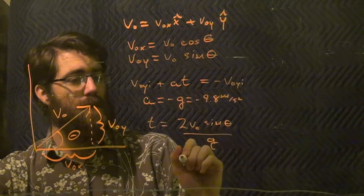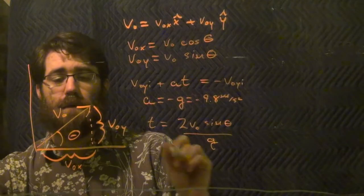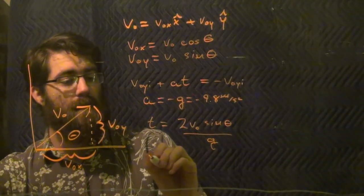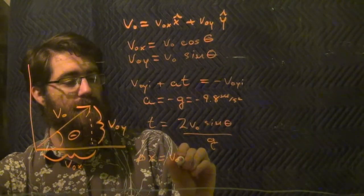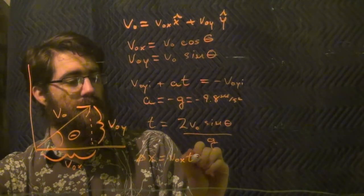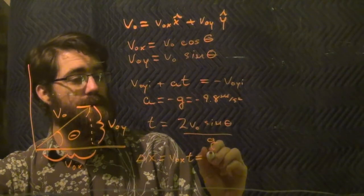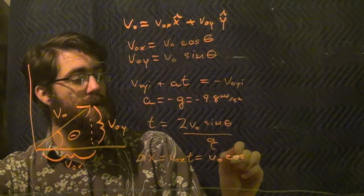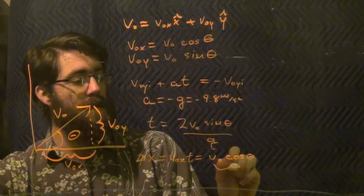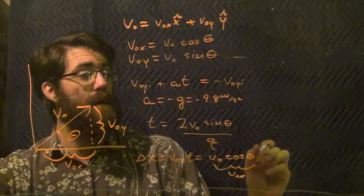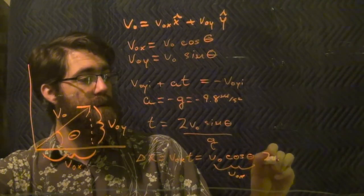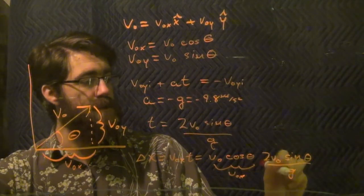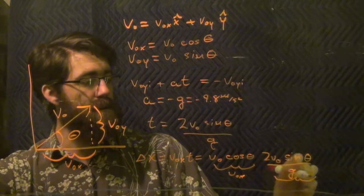Which then allows us to solve for the total distance traveled by the projectile, which will be delta x equals v-naught x t, equals v-naught cosine theta times 2 v-naught sine theta over g. This is my t term.